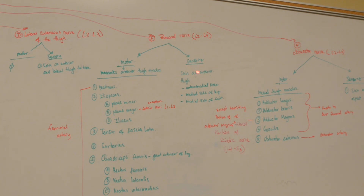For the sensory components of the femoral nerve, it innervates the skin on the anterior thigh, anteromedial knee, medial side of the leg, and the medial side of the foot.